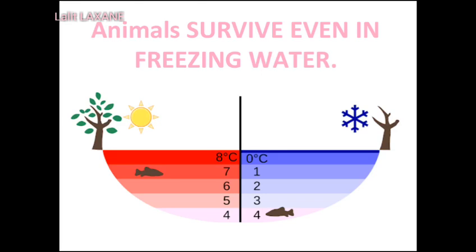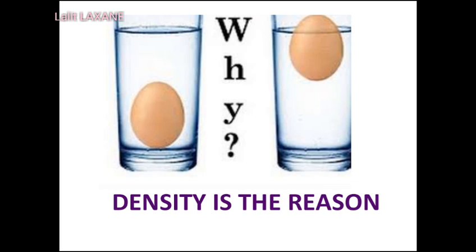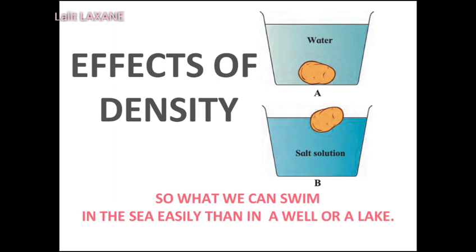In cold countries, how do aquatic animals remain alive even after the rivers or lakes freeze in winter? Take two big glasses of water. Add 4 to 5 spoonfuls of salt to the water in one glass and dissolve it completely. Now place a potato in the water in the second glass. The potato will sink. Take out the potato and put it in the salt water and observe. The density of water in that glass is greater due to the dissolved salt, and the potato floats because of its increased density.